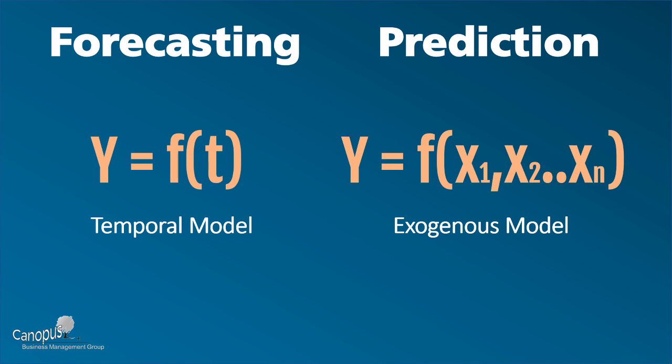Such a model is called a temporal model, because we only use time to predict the value of y — whether it is GDP, sales, or something about pollution. But with prediction, we use other predictors or indicators which are external to that particular factor, and that's why these models are called exogenous models.